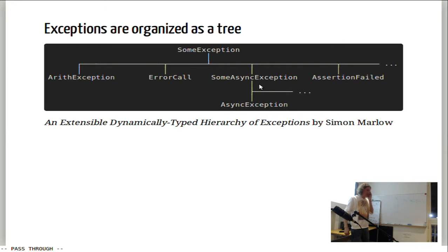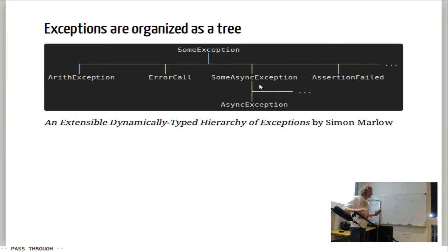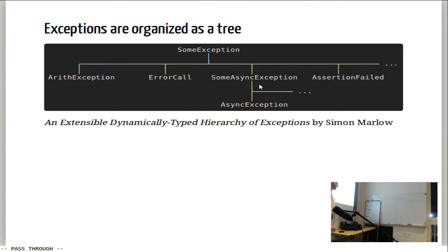In Java, for example, we see the exception tree because it's reflected in the type hierarchy. We don't see that tree in Haskell's type-level properties — it's dynamically typed. Can you extend the tree after the leaves? In Java you'd just extend a class. This paper claims exceptions should be extensible, and they kind of are, but could we extend the tree at Bar specifically? That's not really possible.